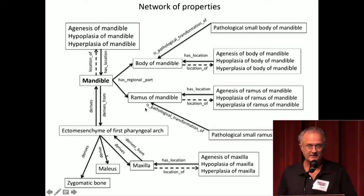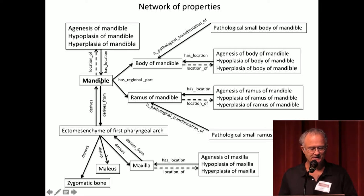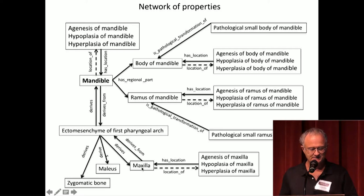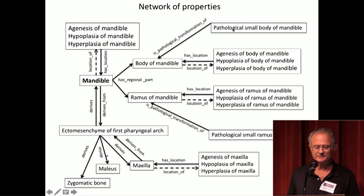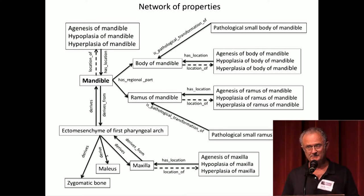What Onard and we have been representing over many years is a very large network of properties and terms. For example, the mandible is the location of a phenotypic abnormality like agenesis. The mandible derives from the ecto-mesenchyme of the first pharyngeal arch, which drives many other things including the maxilla, which is the location of another phenotypic abnormality. The maxilla has parts such as the body of the mandible, which is the location of another phenotypic abnormality, and the body of the mandible can transform into a pathological entity like a pathologically small body of the mandible. These relations are probably richer than most external ontologies because they're focused directly on the FaceSpace situation.